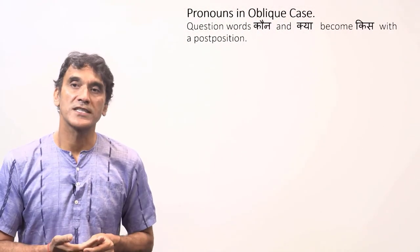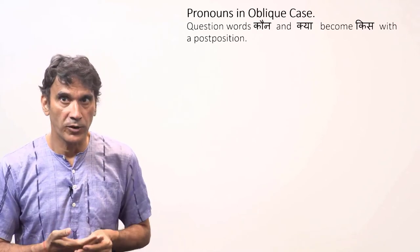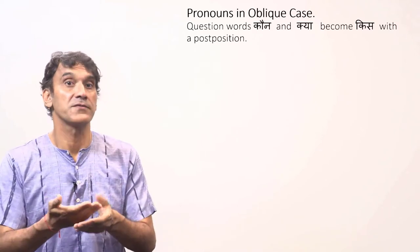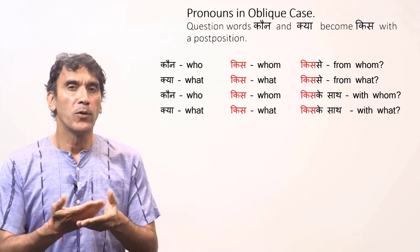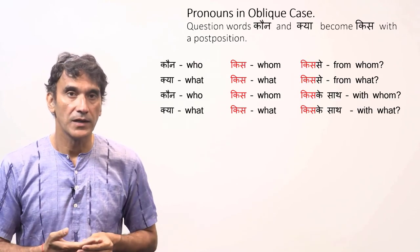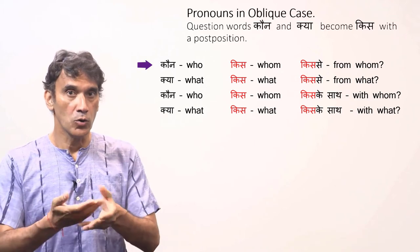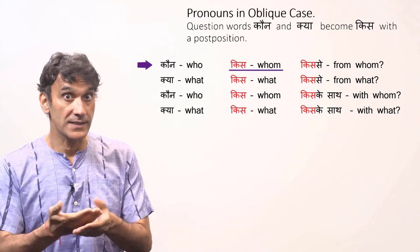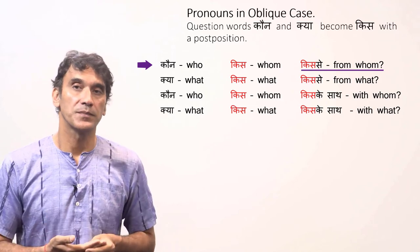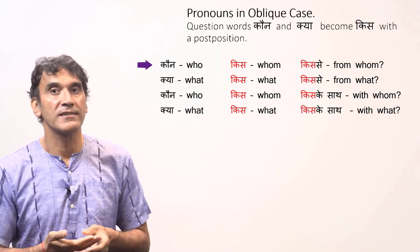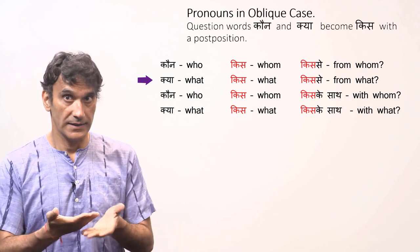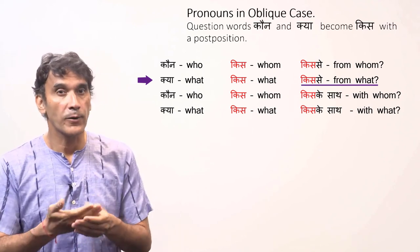The question words 'कौन' and 'क्या' also have an oblique form — they both become 'किस' with a postposition. Both question words have the same oblique form: 'कौन' (who) becomes 'किस' (whom) — 'किस से' means 'from whom'. 'क्या' (what) becomes 'किस' — 'किस से' means 'from what'. Just like pronouns, both words are written together with the postposition.